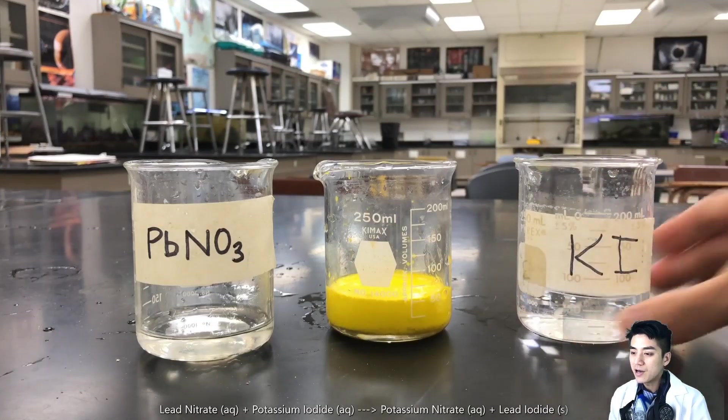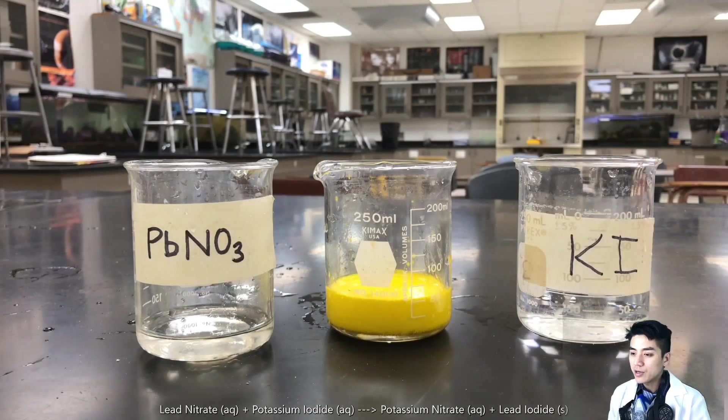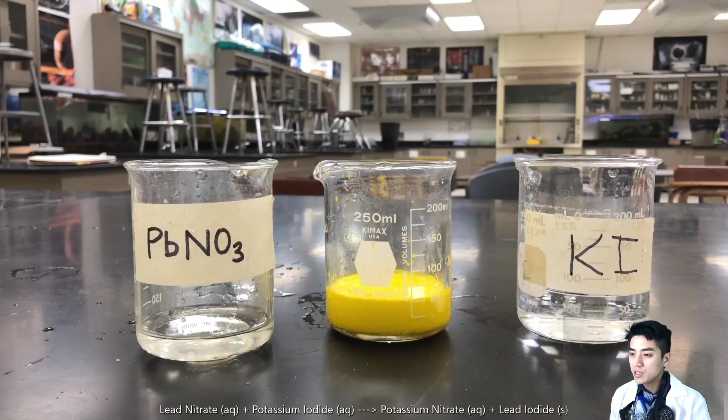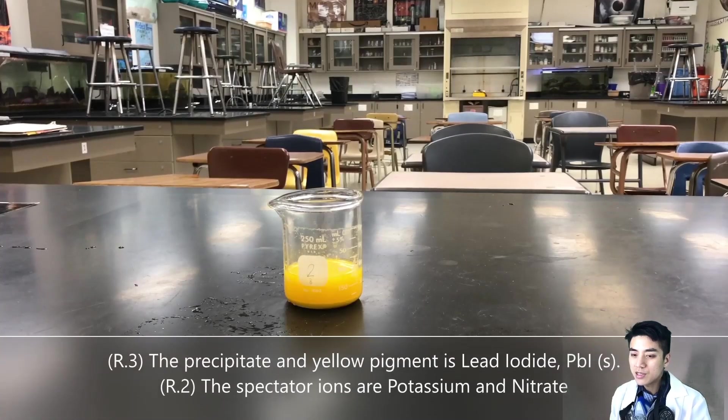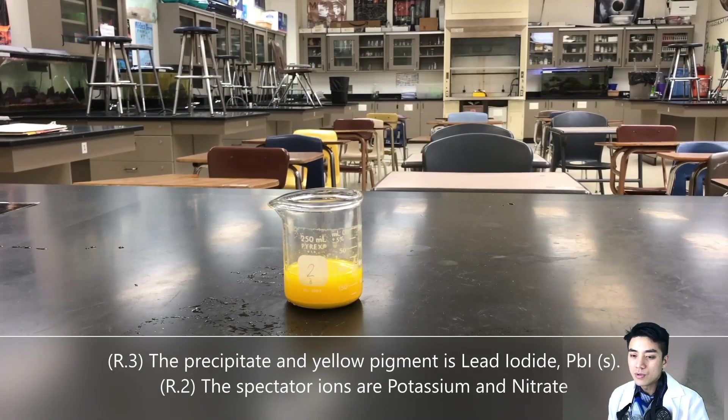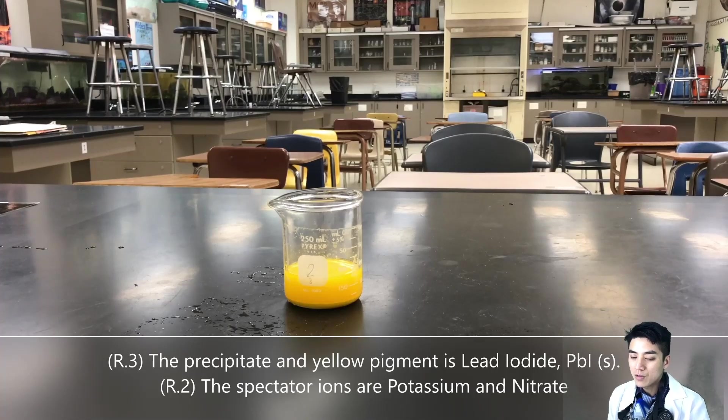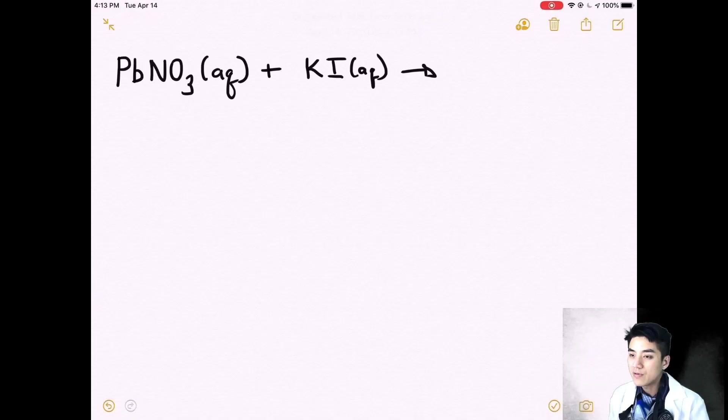Our job now is to find out which one of these products is the yellow precipitate. We have to use our solubility guidelines, and there's two rules that we'll look at specifically: rule three and rule two. You need to watch part one if you haven't done so already.